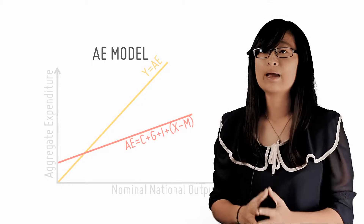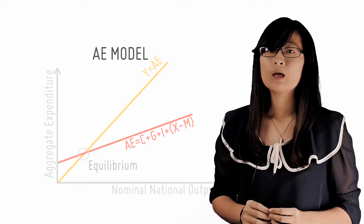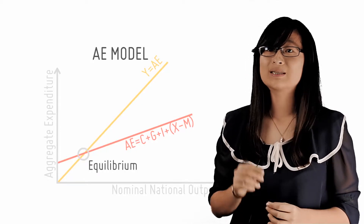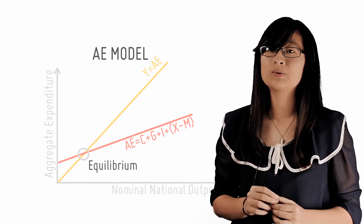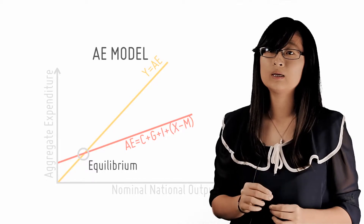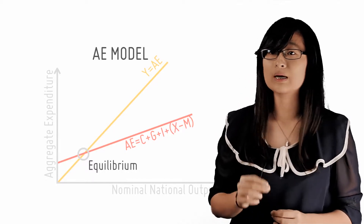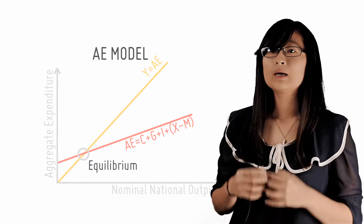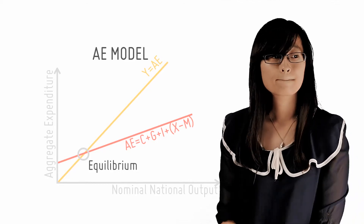We label this line y equals AE. The point at which this line intersects the line representing AE equals C plus G plus I plus X minus M is the equilibrium level of national output.